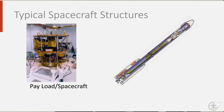Spacecraft are the actual craft that go into space and carry out missions. Examples are satellites, the Space Shuttle, the International Space Station, or the Soyuz capsule. They need help to get into space, but once there, they can maneuver themselves into place or even navigate and travel through space.